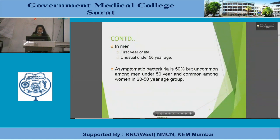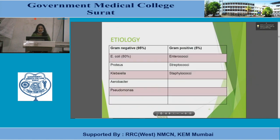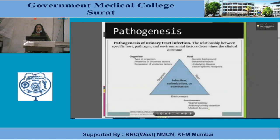Asymptomatic bacteriuria is 50% but uncommon among men under 50 years and common in women aged 20–50 years. Among bacterial infections, 95% of organisms are gram-negative. The most common is E. coli, followed by Proteus, Klebsiella, Aerobacter, and Pseudomonas. The remaining gram-positive organisms include Enterococci, Streptococci, and Staphylococci.